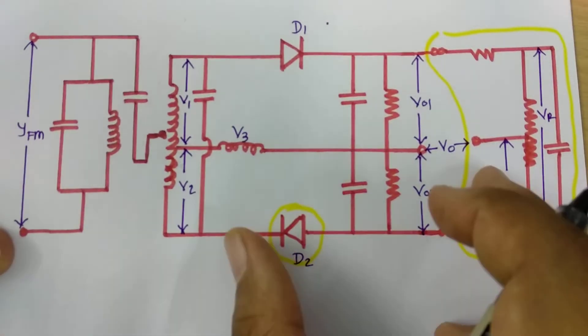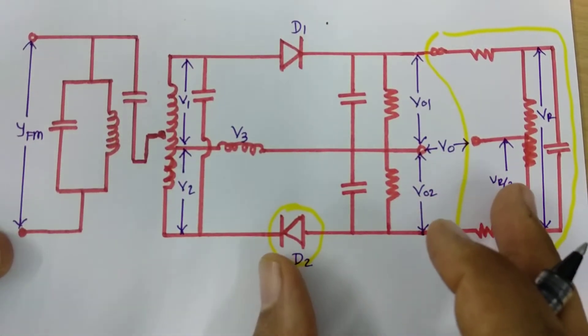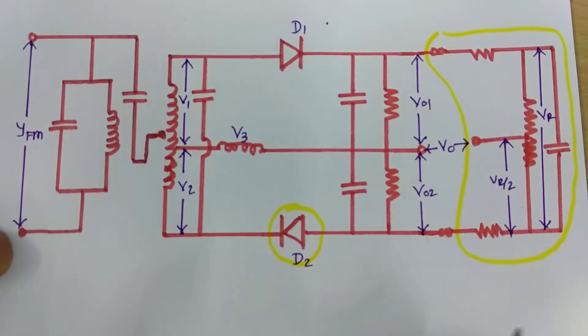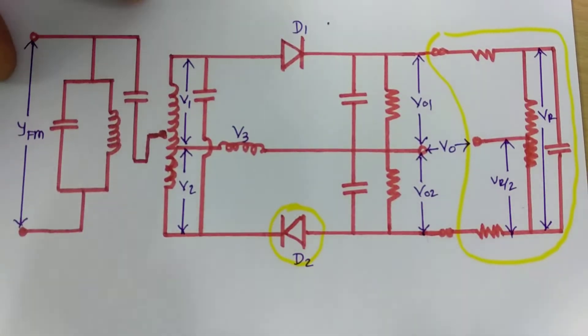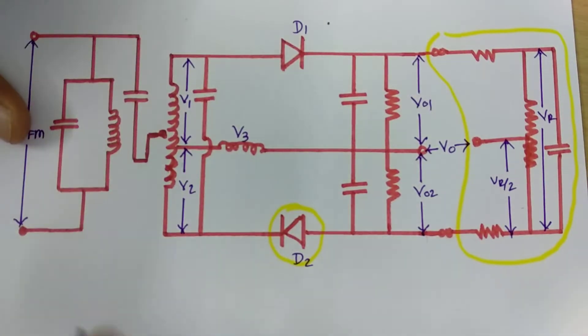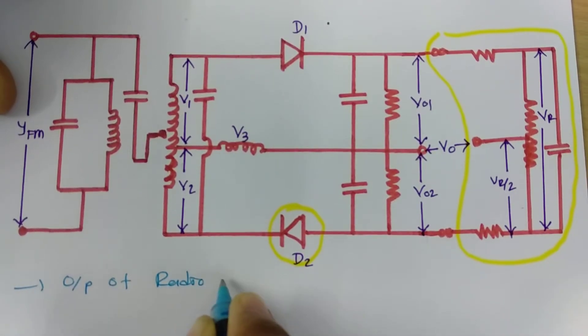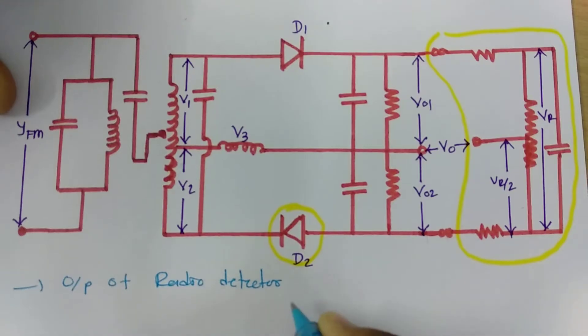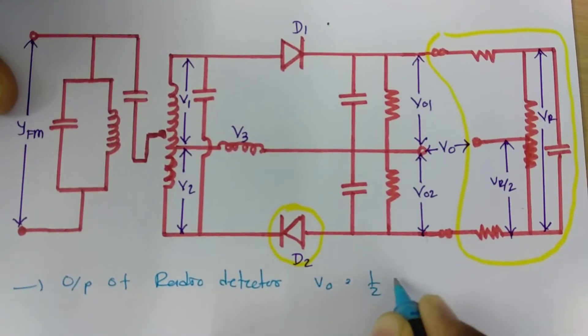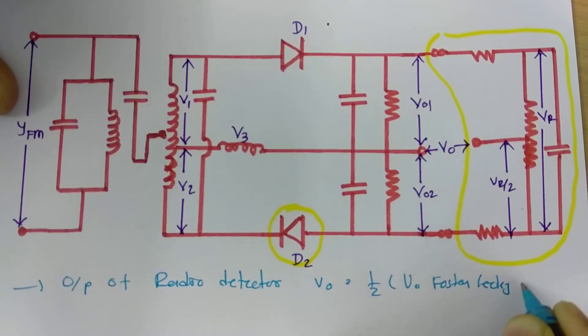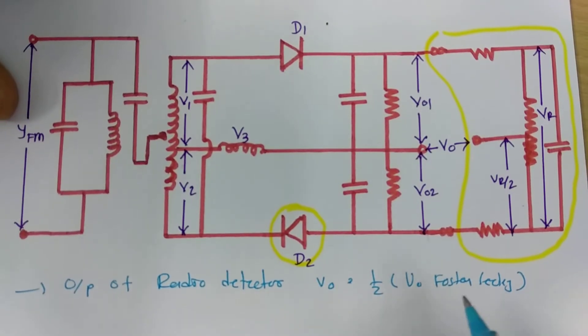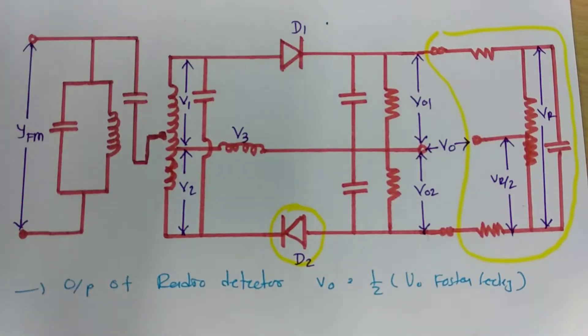Now working that is almost similar so here I will be explaining what will be our output. When we talk about output by using radio detector then output of radio detector that will be half of output of Foster-Cilley.